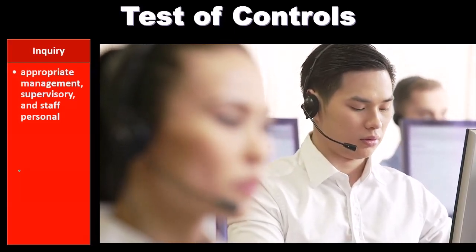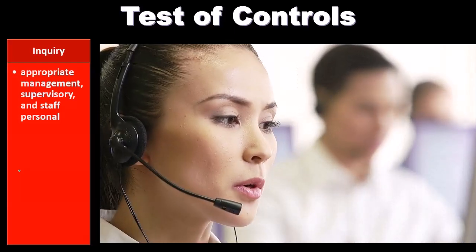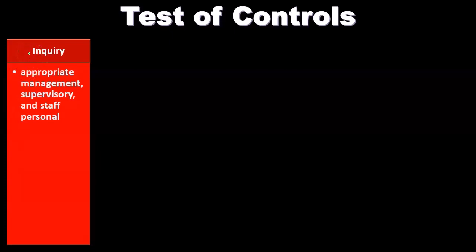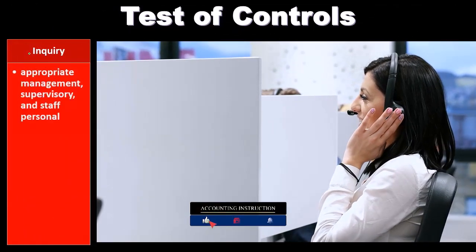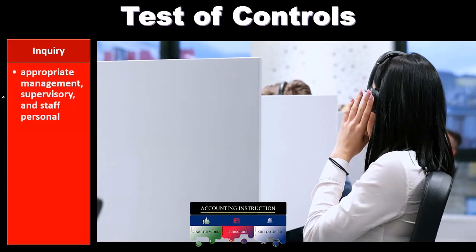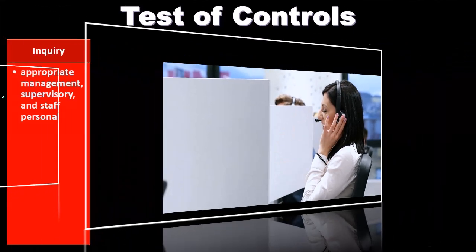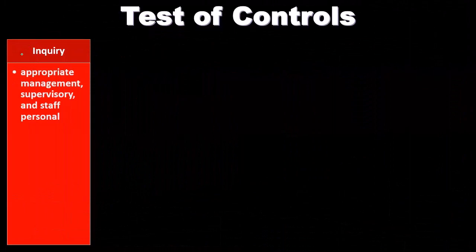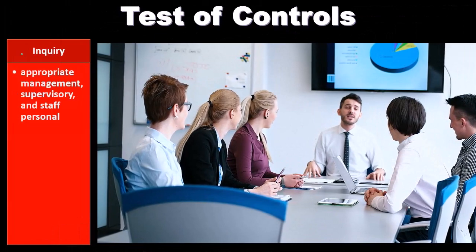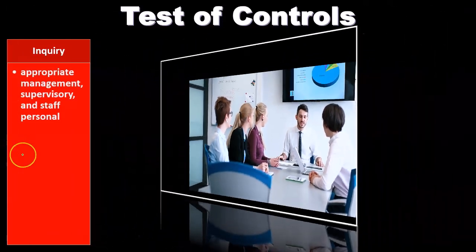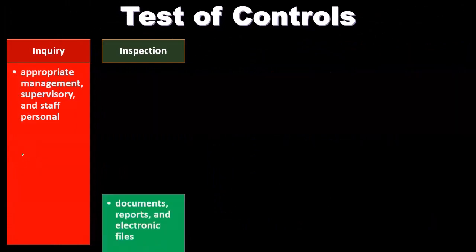Tests of controls include inquiry of appropriate management, supervisors, and staff personnel. As we think about tests of control, we want to consider how reliable these types of evidence are. Inquiry is necessary because it gives us an understanding, but note that we're inquiring of the very management and staff whose financial statements we're evaluating. Inquiry is lower on the evidence reliability scale compared to third-party information not prepared by management, so it usually cannot stand alone as the only type of evidence.